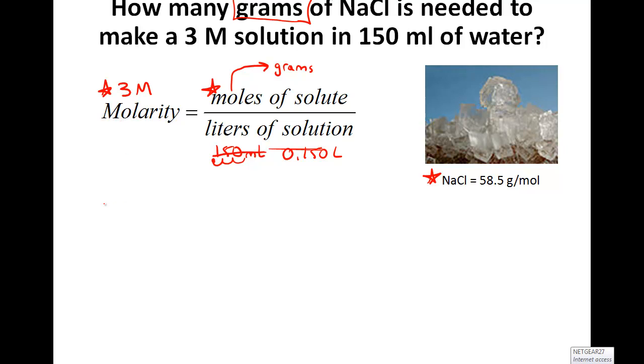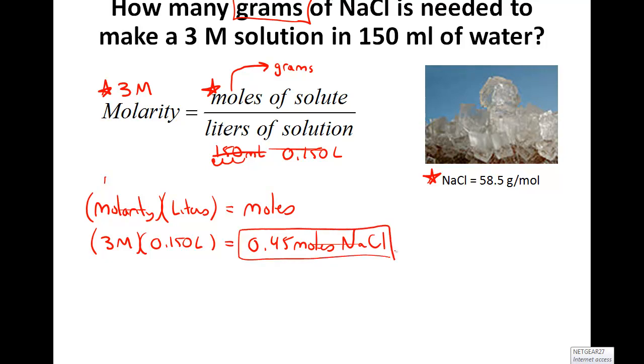So let's rearrange the problem, same as we did last time. What you saw from last time was that the molarity multiplied by the liters is going to equal the moles. And so we're just going to plug the numbers in now. The molarity was 3 molar. The volume in liters was 0.150. And when I crunched the numbers, I end up with 0.45 moles of NaCl. Now that's awesome. We're almost there. The question is asking us specifically for grams, not moles.